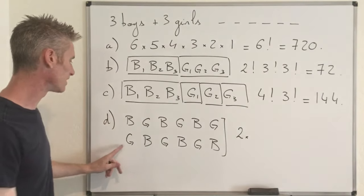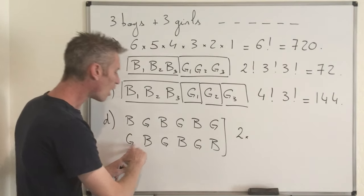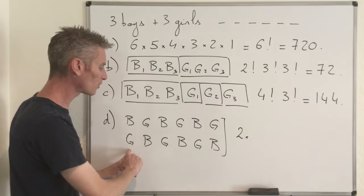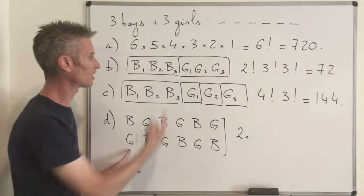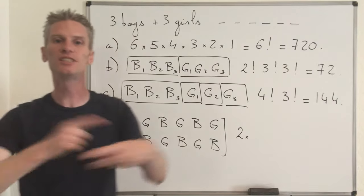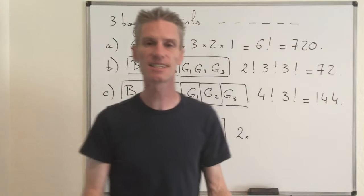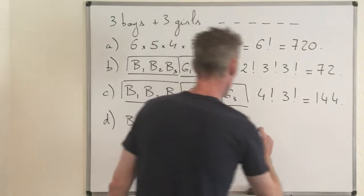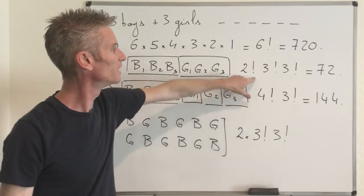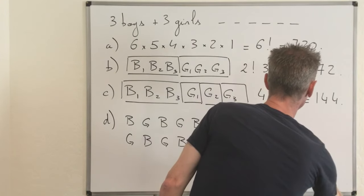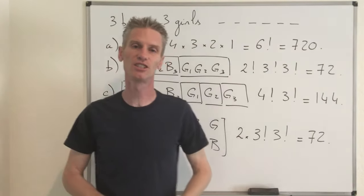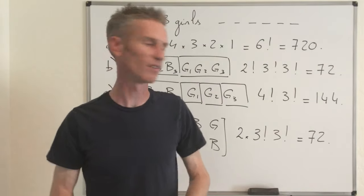Once you fix one of the two gender arrangements, you still need to decide which of the three girls occupies each girl's seat — that gives three factorial permutations. Same for the boys: there are three seats for the three boys, and you consider all possible permutations, giving another three factorial. So the answer is 2 × 3! × 3!. Note that 2 = 2!, so you get exactly the same answer as in question B: 72. The total number of ways the boys and girls can sit in a row such that no two boys are next to each other and no two girls are next to each other is 72.